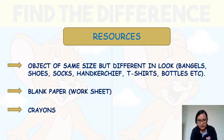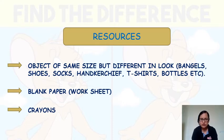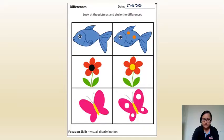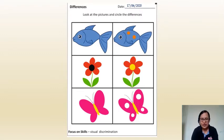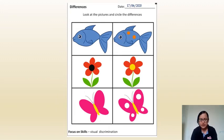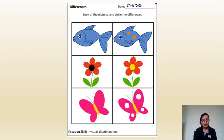Once you are done with that, what you have to do is give the child the following worksheet and crayons. If you have access to the parent app, you can download this worksheet from there and take a printout. But in case you don't have access to the parent app, if you have books, you can find a similar worksheet in a book also.